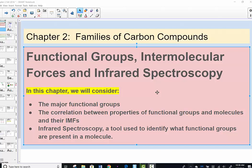Through a process of group work, you're going to tackle teaching one another major functional groups, that correlation between the properties of functional groups and molecular compounds and their intermolecular forces. The chapter wraps up by sharing with us a lab tool called infrared or IR spectroscopy in which we're able to identify functional groups that are present in a molecule.